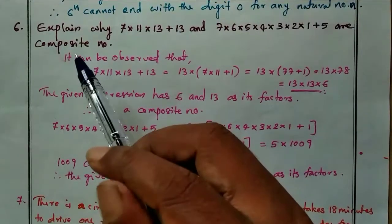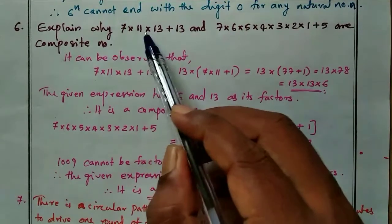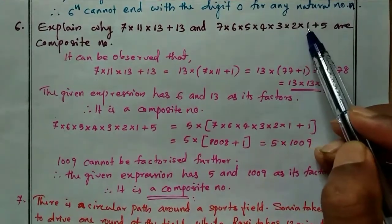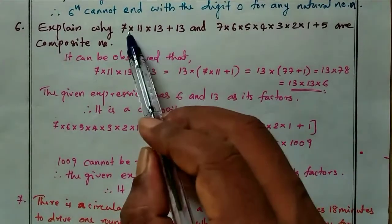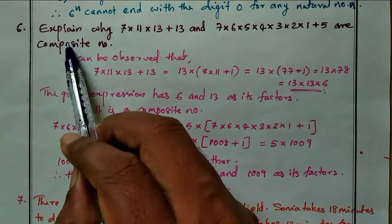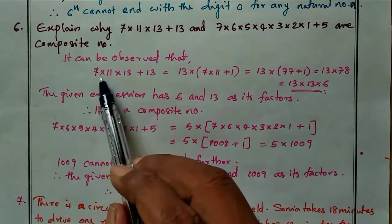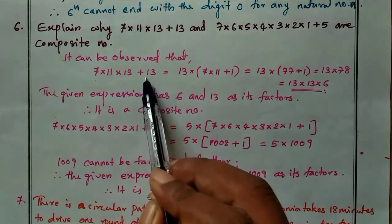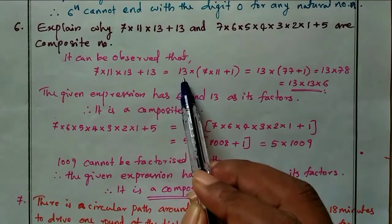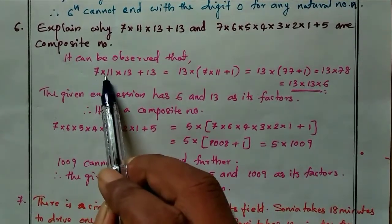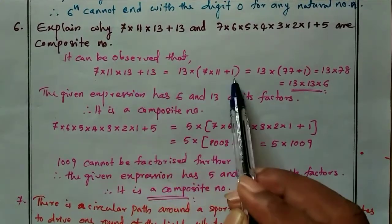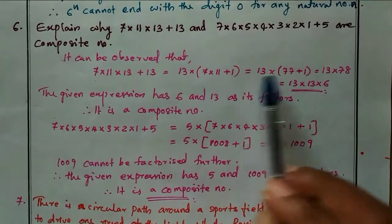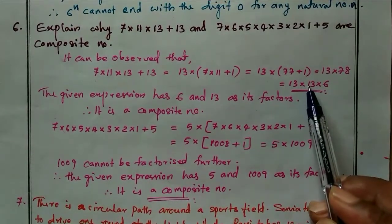Question 6: Explain why 7×11×13 + 13 and 7×6×5×4×3×2×1 + 5 are composite numbers. For the first expression, 13 is the common factor. Taking 13 outside: 13 × (7×11 + 1) = 13 × (77 + 1) = 13 × 78, which can be written as 13 × 6 × 13.